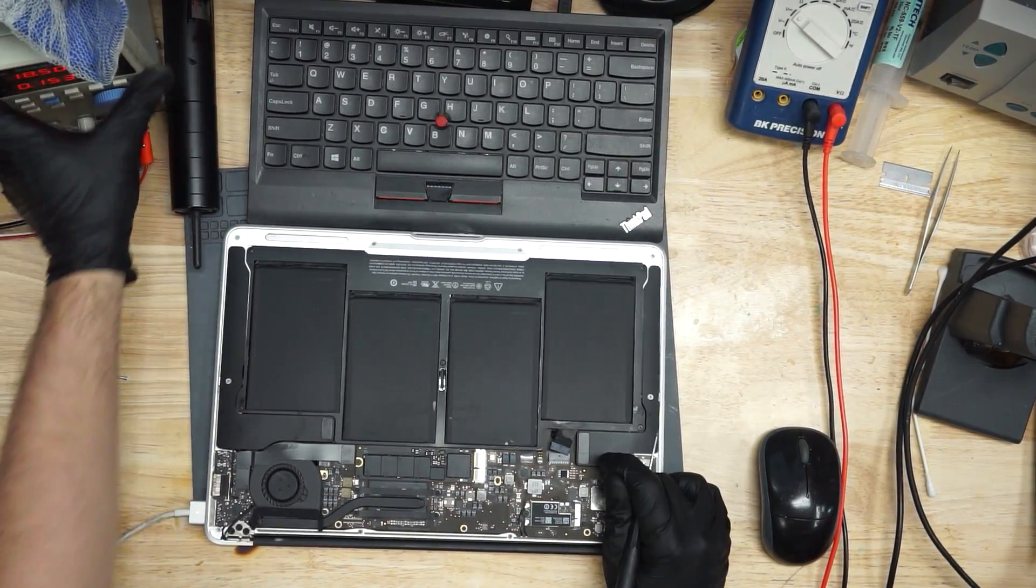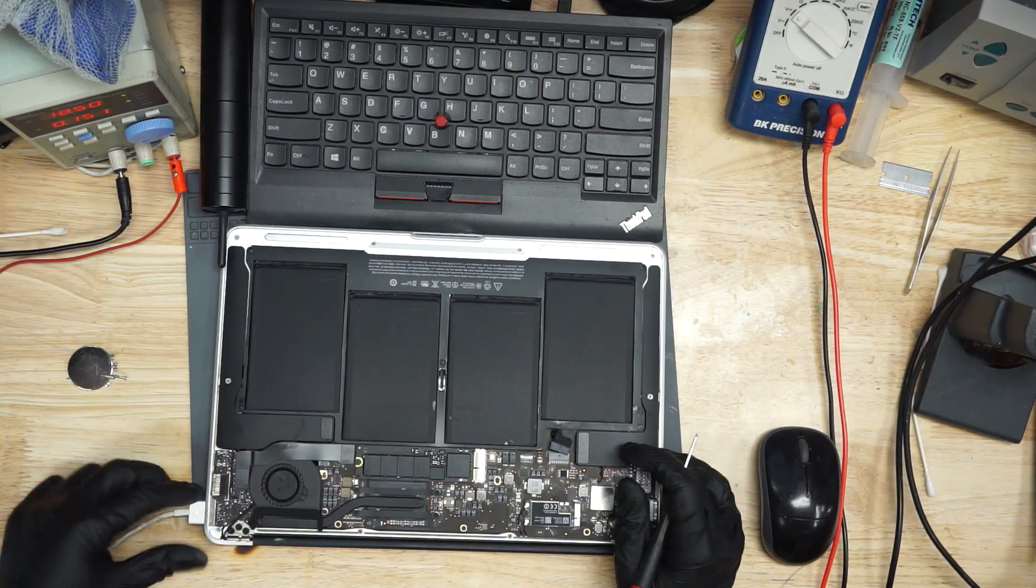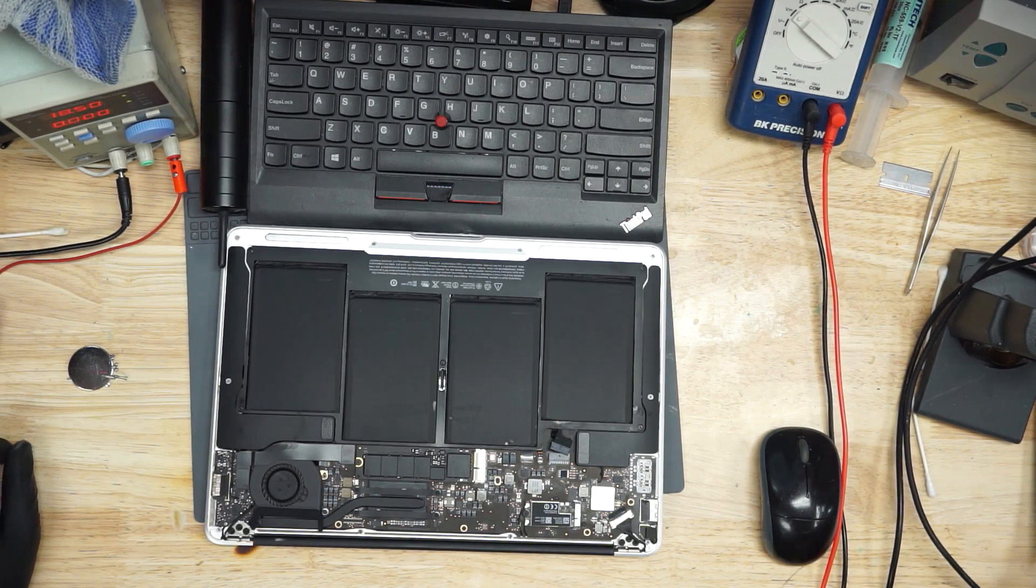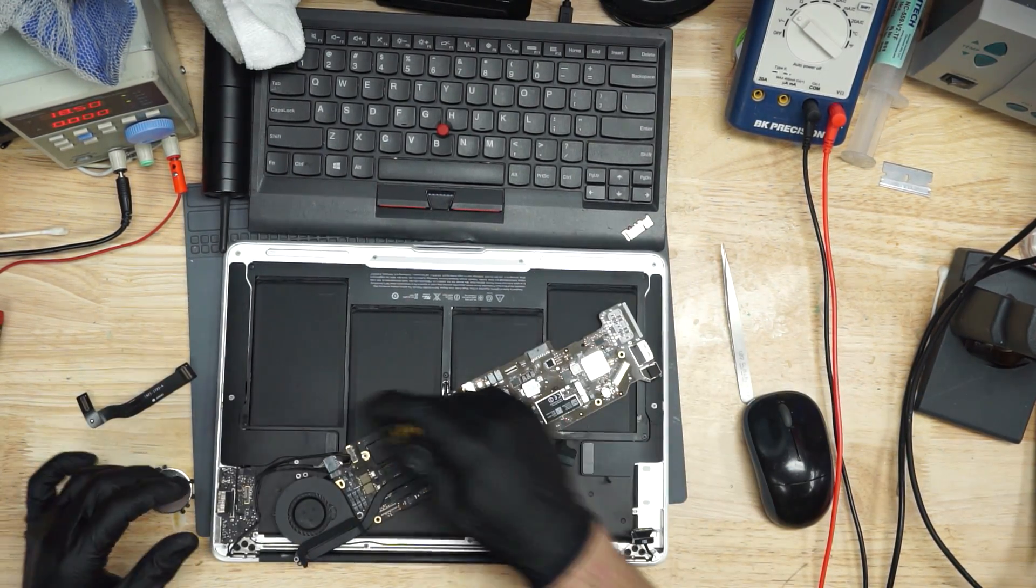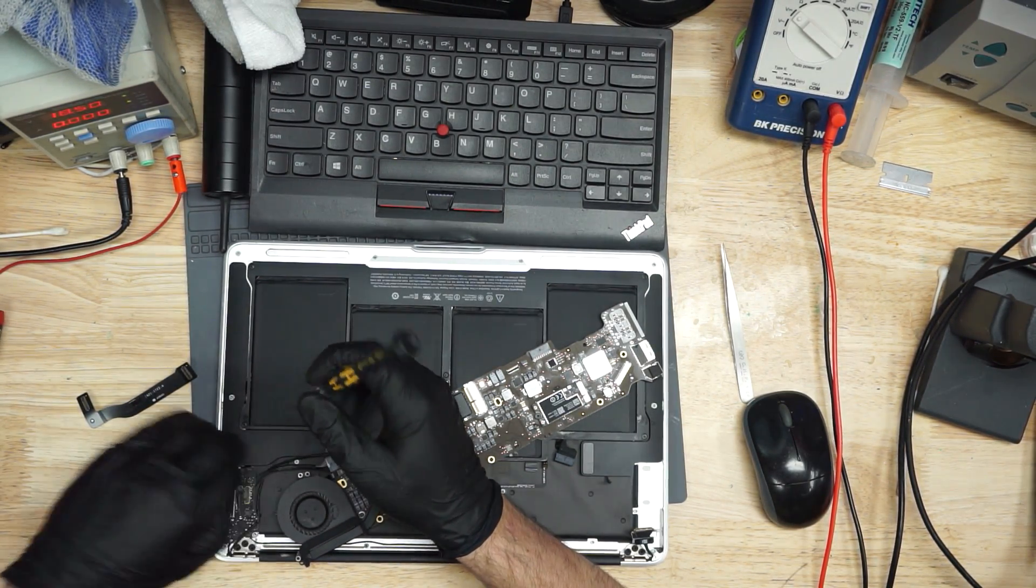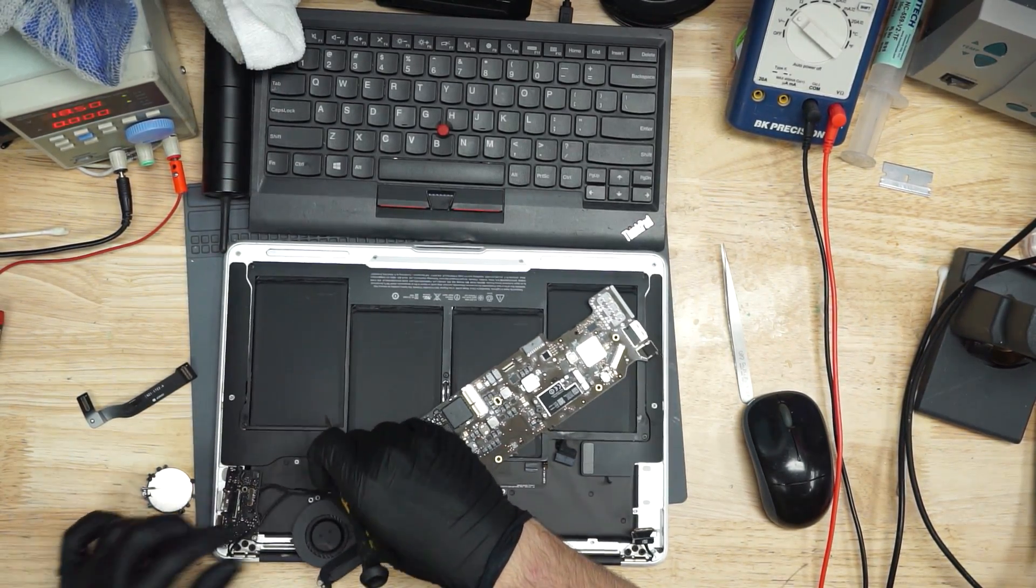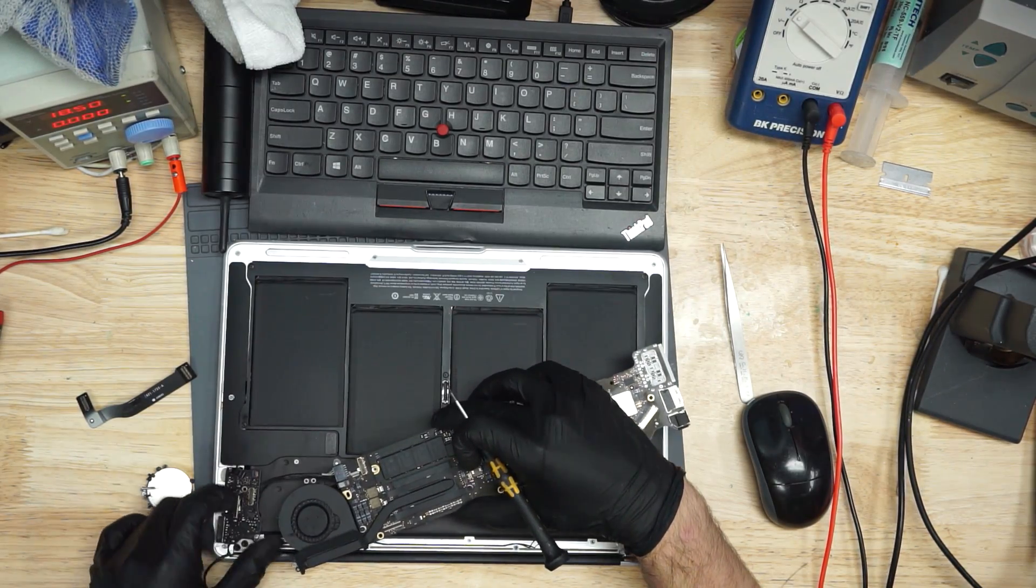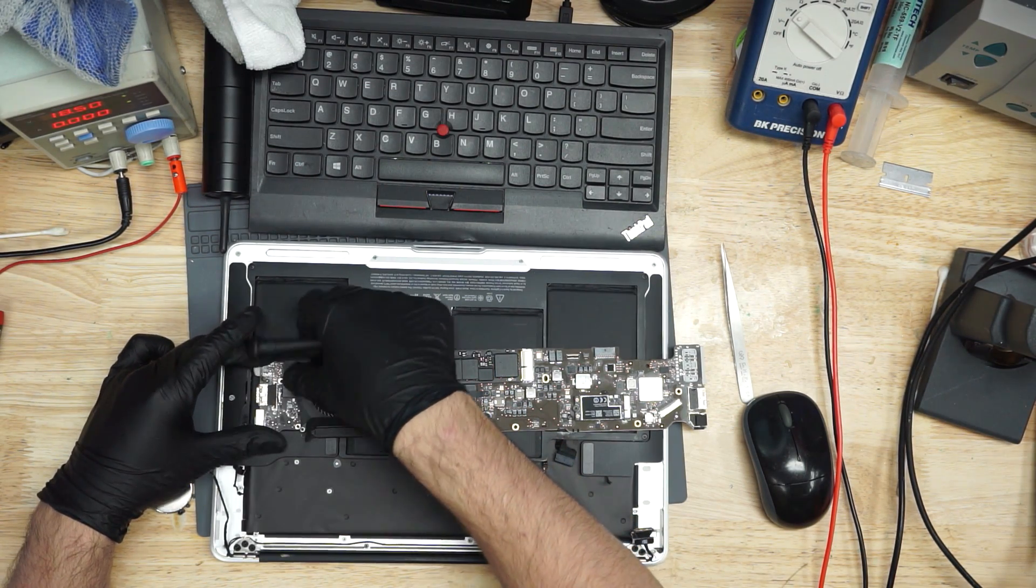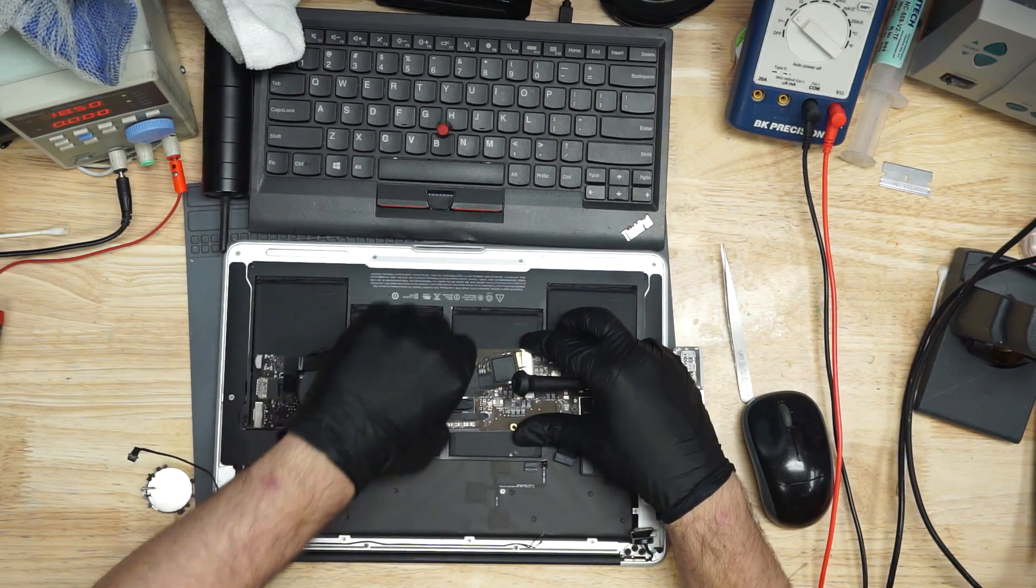This MacBook is drawing 0.1 amps but it's not turning on. Let's see why. First thing we have to do is take the board out. Now typically, a machine that's drawing 0.1 to 0.15 amps is one of two things. Behind door number one, a short to ground on PPBush G3 High. Behind door number two, every rail is coming on besides CPU vCore because of a lack of all sys power good.